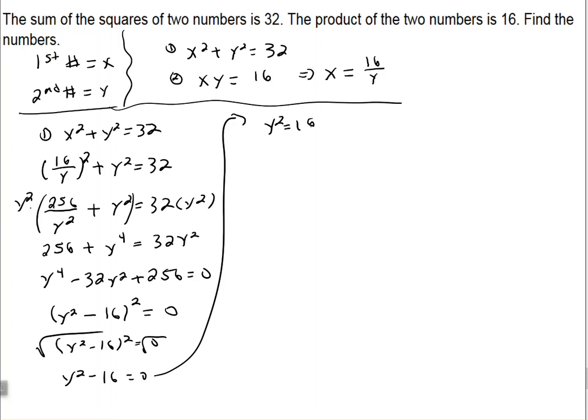And then again, we want to undo that square root. So let's take the square root of each side again. So y equals positive or negative 4.